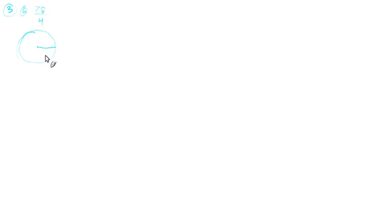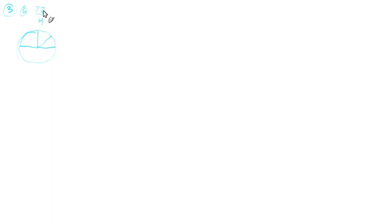So 7π over 4 — well, if you remember, this is π. To go halfway around is π. This would be π over 2. This would be π over 4 — that's 1π over 4. This would be 2π over 4, which simplifies to π over 2. Then 3π over 4, 4π over 4. The 4s would cancel and we'd have π. So that's how we'll count it.